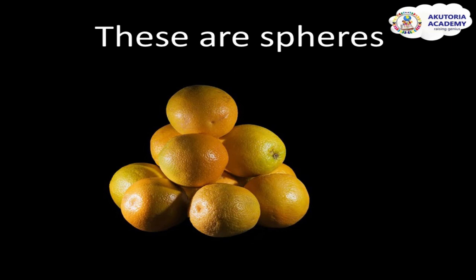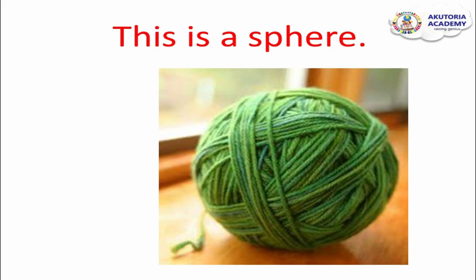These oranges also have the shape of a sphere — see, they look like balls as well. They also have the shape of a sphere, just like a ball. That's how we keep them on the table; they can stand on their own. As you can see in this picture, they are not being held — they are standing on their own because they are spheres, and a sphere is a solid shape. This yarn was rolled to make the shape of a sphere, and you can see the yarn is standing on the table by itself.